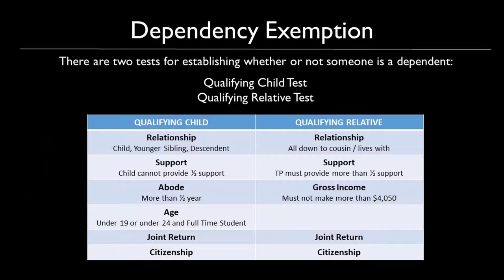So now we want to figure out whether we can claim other people's personal exemptions legally. There are two rules: if they are a qualifying child or a qualifying relative. For the qualifying child there are six tests: the relationship test, the support test, the abode test, the age test, the joint return test, and the citizenship test. For the qualifying relative it is the relationship test, support test, gross income test, joint return test, and citizenship test.